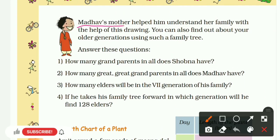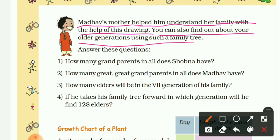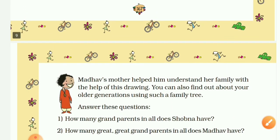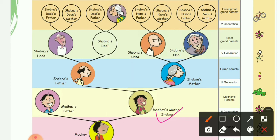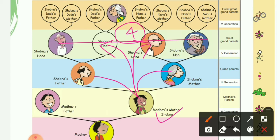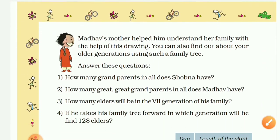Madhav's mother helped him understand her family with the help of this drawing. You can also find out about your older generations using such a family tree — you can try making your own family tree from your mother's side. Now let's answer some questions. First question: how many grandparents in all does Shobhana have? Shobhana is Madhav's mother. Here are Shobhana's parents, and these are her grandparents — we can see four grandparents. So the answer is four.